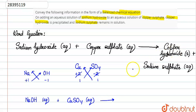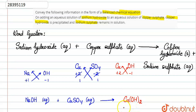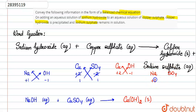अब आते हैं products पर। एक दे रखा है copper hydroxide — Cu और OH। Cu की होती है plus two, hydroxide की होती है minus one। तो यहाँ OH के पास two जाएगा, तो यह बन गया Cu(OH)₂, और यह solid state में है। आगे sodium sulfate: Na और SO₄। Sodium का plus one, SO₄ का minus two — cross करने पर Na₂SO₄ बनता है, और यह aqueous state में है। तो यह हमारी equation आ गई।